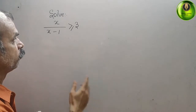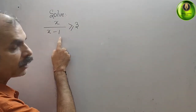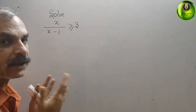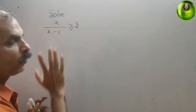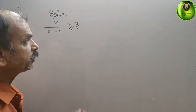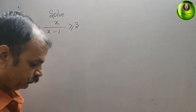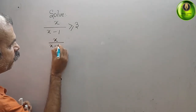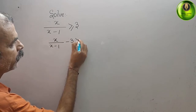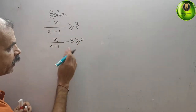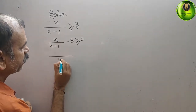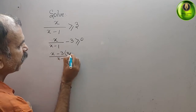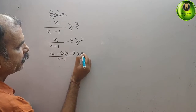Your question is: x/(x-1) ≥ 3. This is a rational inequality of the form p/q. First, bring 3 to the left side. You get x/(x-1) - 3 ≥ 0. Taking a common denominator, you get [x - 3(x-1)] / (x-1), which is greater than equal to 0.